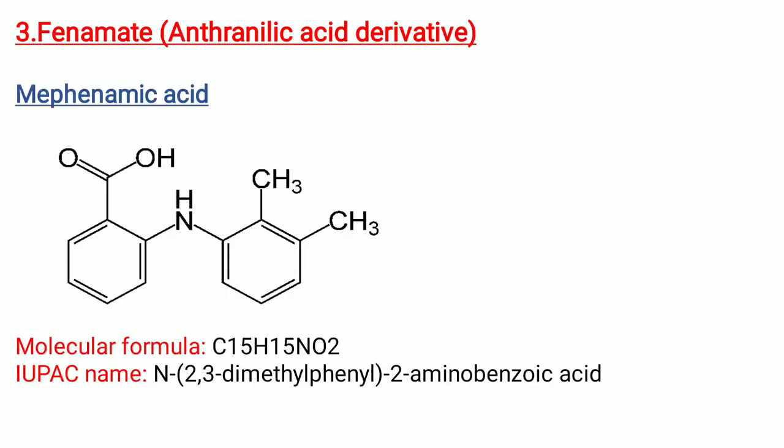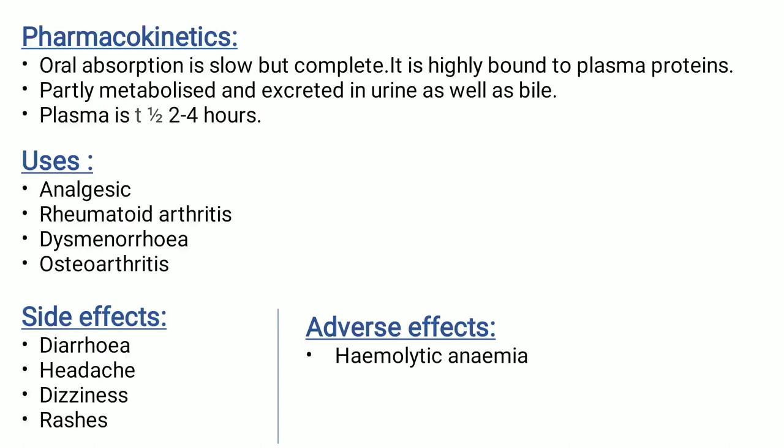Third is phenamates — anthranilic acid derivatives. We take the example of mefenamic acid. Its molecular formula is C15H15NO2. IUPAC name is N-(2,3-dimethylphenyl)-2-aminobenzoic acid. Pharmacokinetics: absorption is done orally, but it is slow and complete. It is highly bound to plasma proteins. It is partly metabolized and excreted in urine as well as bile.